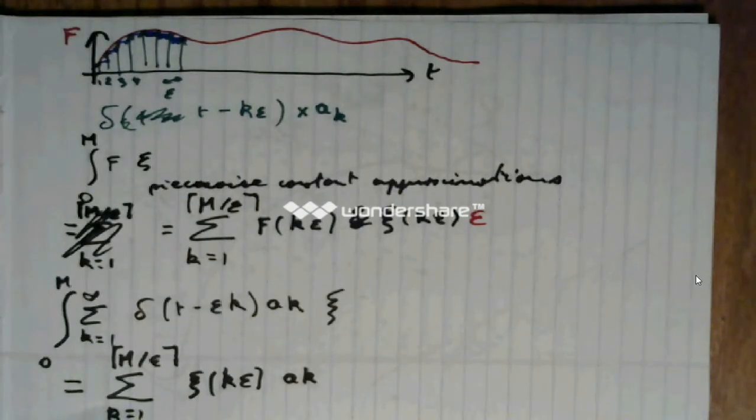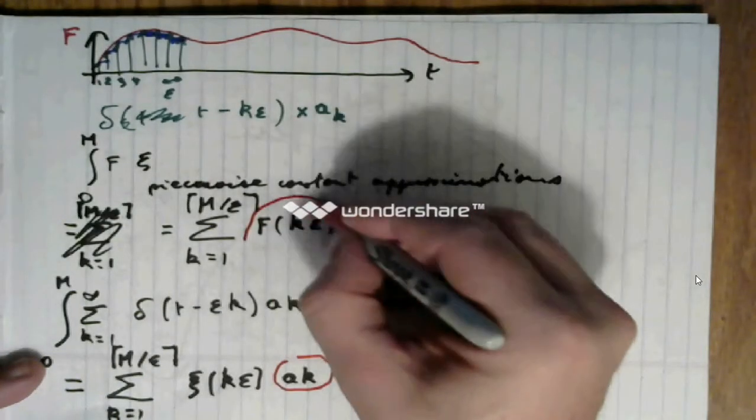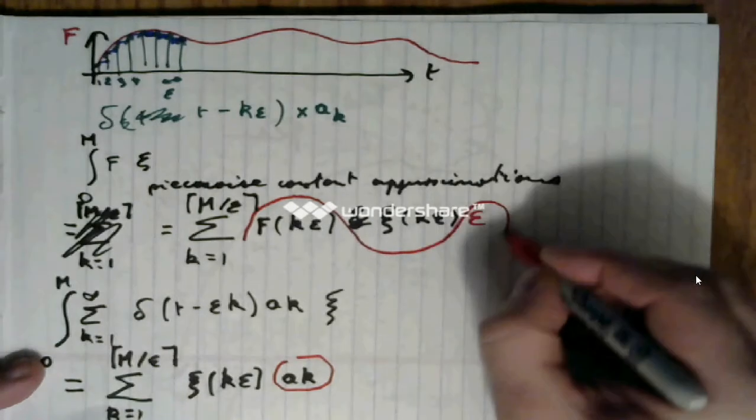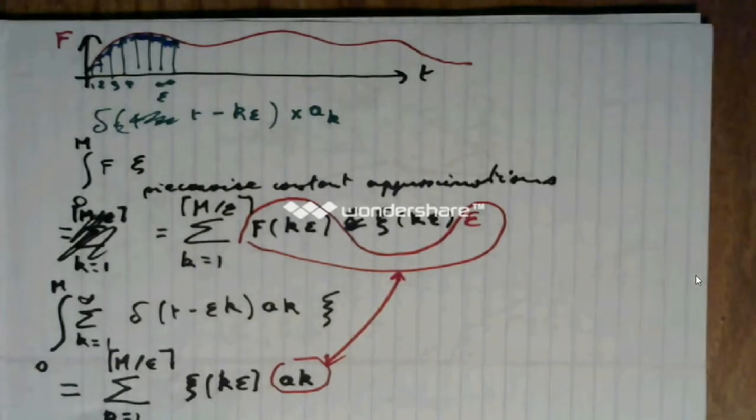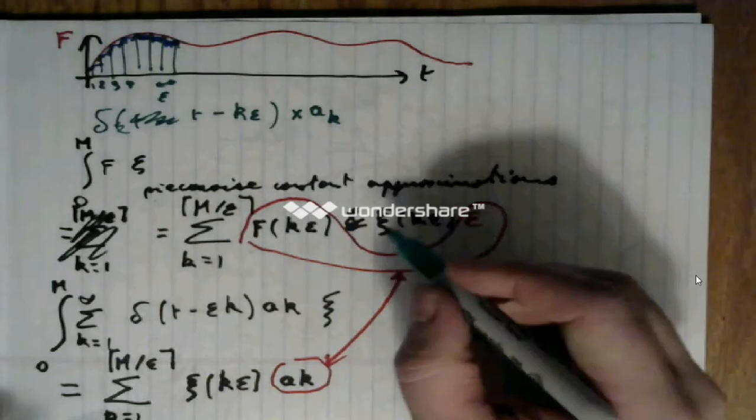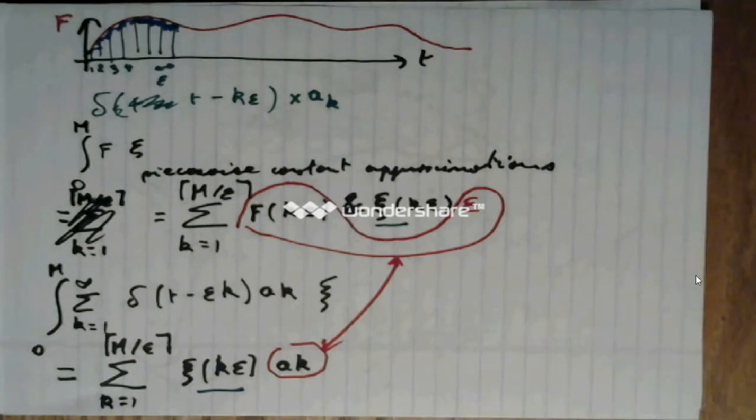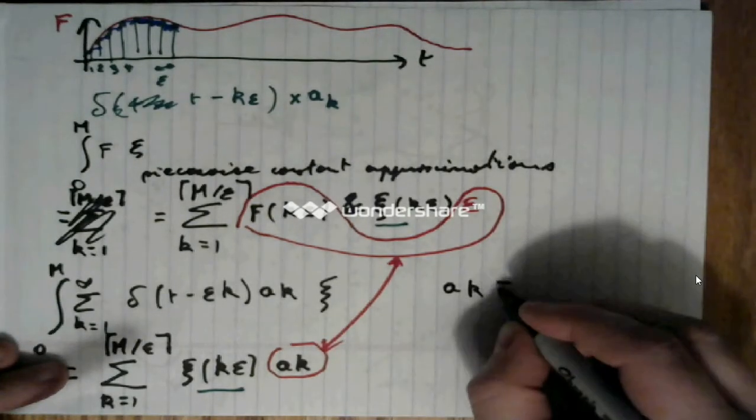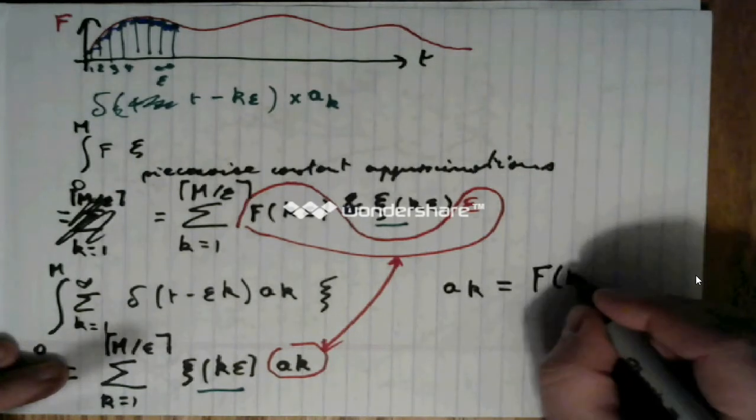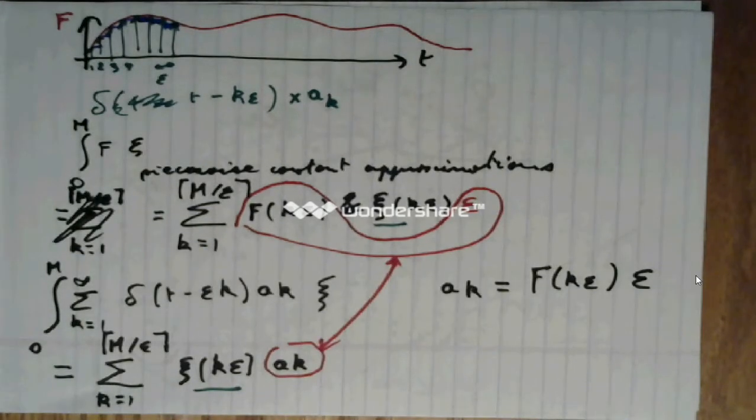Now, if we compare these terms with these terms, and since we want the two expressions to be about the same for any xi, we can set the ak's to be equal to f of k epsilon times epsilon.